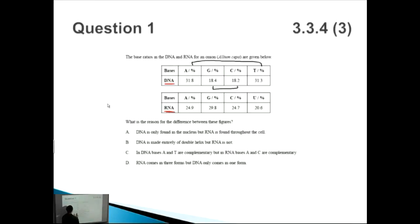So that's one key thing to notice. Now let's go through the different answers. What is the reason for the difference between these figures? DNA is only found in the nucleus but RNA is found throughout the cell. Well, this is a true statement, however it doesn't actually answer the question. It doesn't actually account for the difference between these figures.